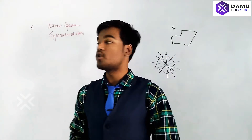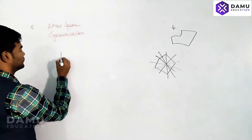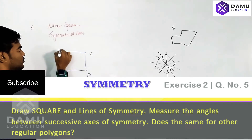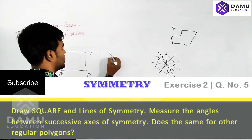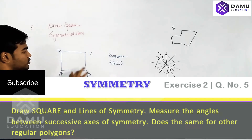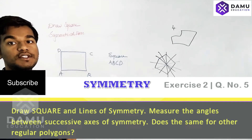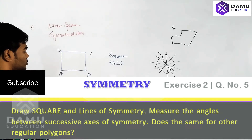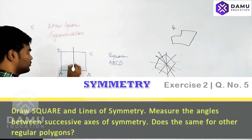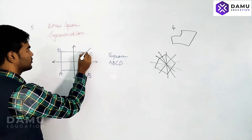The fifth question asks: draw a square and draw the axes of symmetry, then find the angles between each axis of symmetry. We draw square ABCD. You can refer to the construction of triangles section for how to construct a square. Then draw the lines of symmetry — there is one, then two, and also along the diagonals.